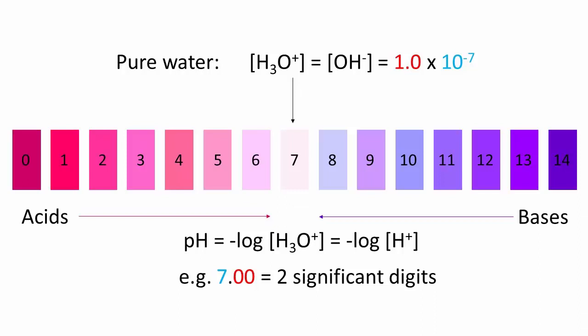Just as we have pH, we have pOH. The properties of logarithms are such that the sum of the pH and the pOH at 25 degrees Celsius is 14.00.